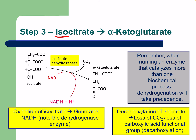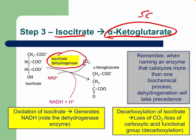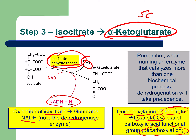Step three: isocitrate is converted to alpha-ketoglutarate (five carbons) using isocitrate dehydrogenase. This involves two processes: oxidation of isocitrate generating NADH, and decarboxylation causing loss of CO2 — this is the first CO2 produced in the citric acid cycle. When an enzyme catalyzes more than one biochemical process, dehydrogenation takes precedence in naming, hence the name isocitrate dehydrogenase.